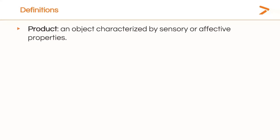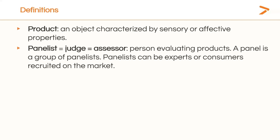Here are a few words I will be using a lot during these two sessions. A product is an object characterized by sensory or affective properties. A panelist, judge, or assessor is a person evaluating products. A panel is a group of panelists or judges. Panelists can be either trained experts — for instance, experts trained in tasting and grading wines or evaluating the sensory characteristics of wines — or they can also be consumers recruited on the market who are untrained.